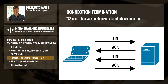A TCP connection is terminated using a 4-way handshake. Once each side of the connection is done sending data, it terminates its side of the data connection independently. If a host has finished sending data and wants to terminate the connection, it sends a FIN segment, and the other side of the connection responds back with an ACK segment. Once the host has received the ACK back, its half of the connection is closed, meaning it can no longer send any data.